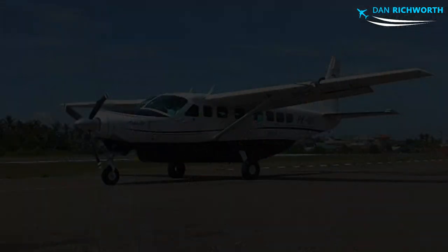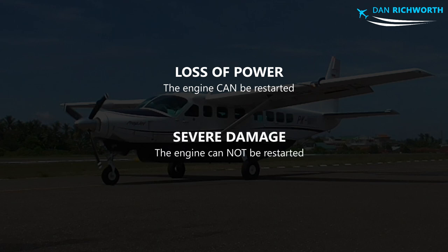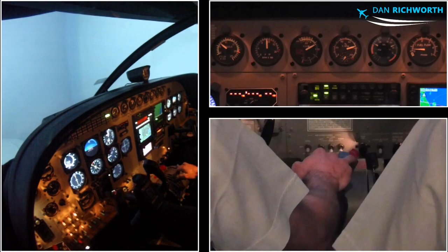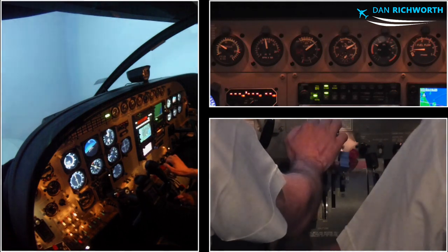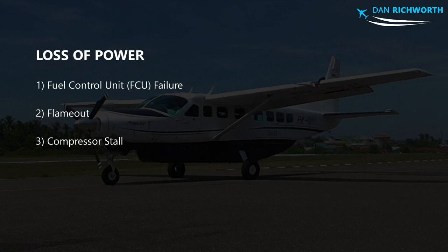Engine failures in any aircraft can be put into one of two categories. The first category is a temporary loss of power — in other words, the engine can be restarted. The second category is severe damage — the engine cannot be restarted. In this video, myself and my colleague are going to demonstrate some of these different types of engine failures at various stages of flight, using the simulator of a Cessna Grand Caravan. The three most common types of loss of power include fuel control unit failures, flame-outs, and compressor stalls. Let's take a look at the engine indications for each of these scenarios and see if you can guess what just happened.